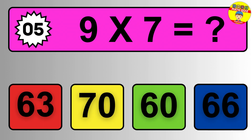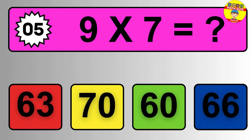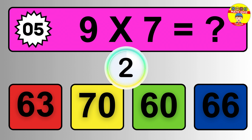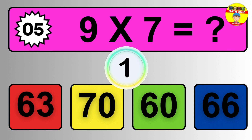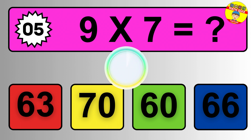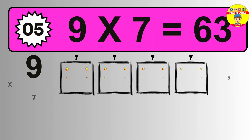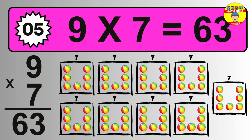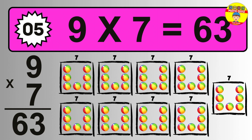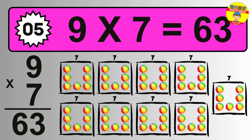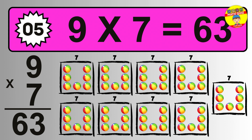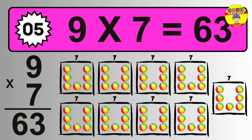Question five: nine times seven equals what? The answer is nine times seven is sixty-three. To calculate, we have nine groups with seven balls each. So how many balls do we have? Sixty-three balls.